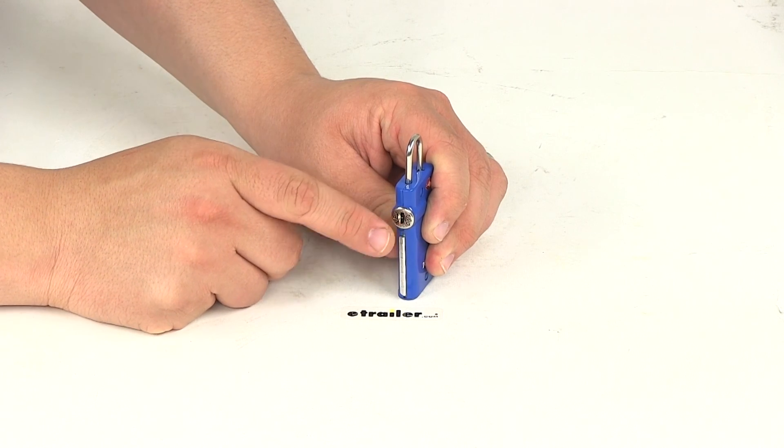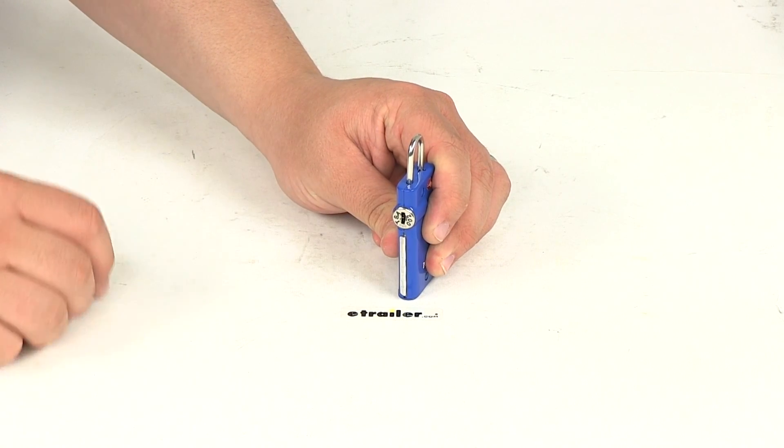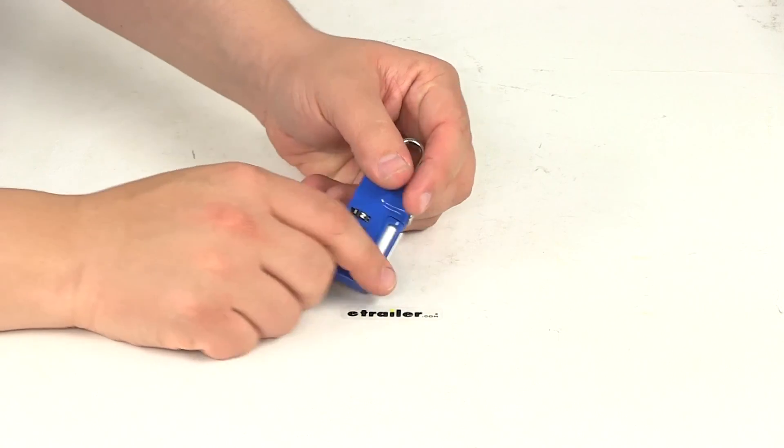This is the key slot. Again, this is just for TSA master keys, so it doesn't come with a set of keys. It just comes with the combination lock.